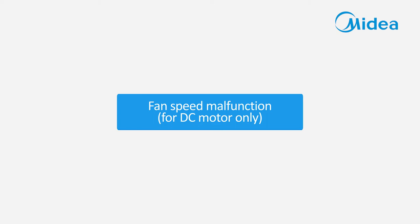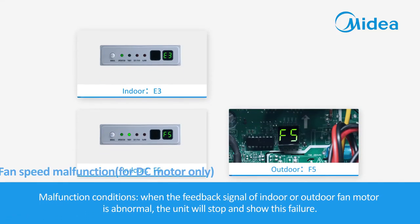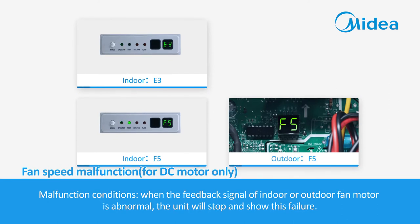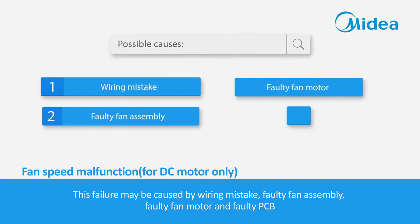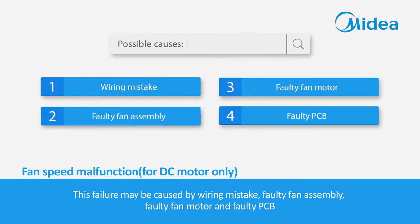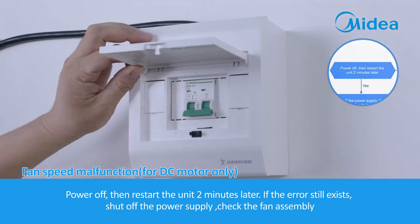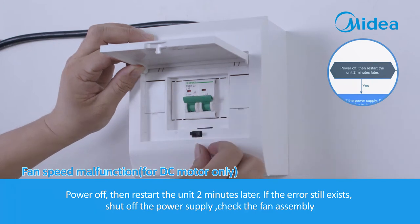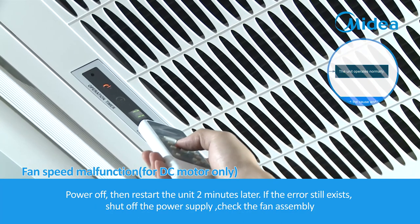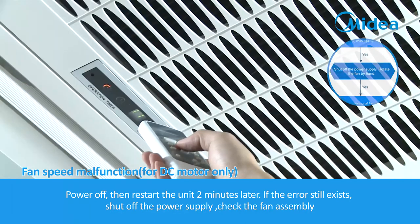Fan speed malfunction (for DC motor only). Malfunction conditions: when the feedback signal of the indoor or outdoor fan motor is abnormal, the unit will stop and show this failure. This failure may be caused by wiring mistake, faulty fan assembly, faulty fan motor, or faulty PCB. Troubleshooting: power off, then restart the unit 2 minutes later. If the error still exists, shut off the power supply and check the fan assembly.